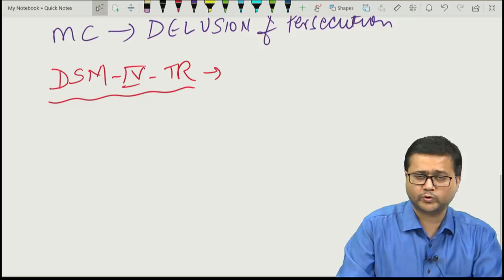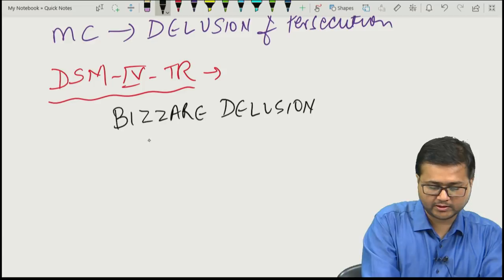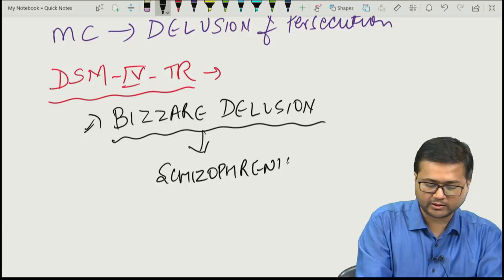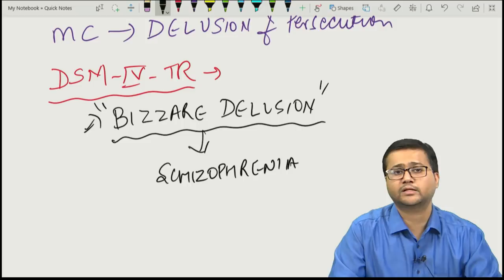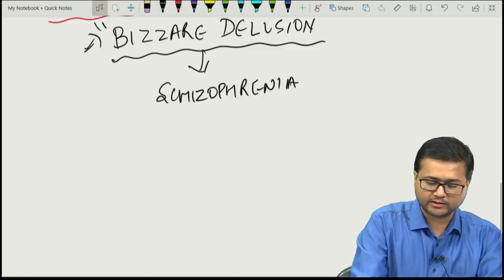In DSM-4 TR, if a person had a bizarre delusion, this was considered an important criterion for schizophrenia. That importance has been removed from DSM-5, but we should still understand the concept of bizarre and non-bizarre delusions.